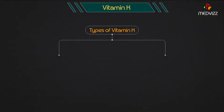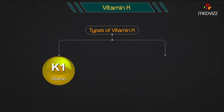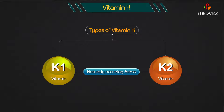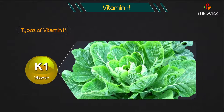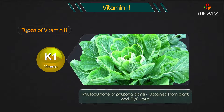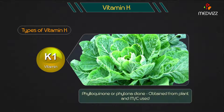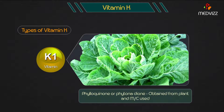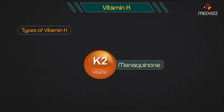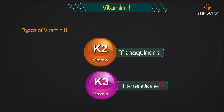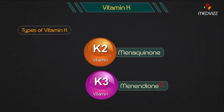Types of Vitamin K: Vitamins K1 and K2 are the two naturally occurring forms of vitamin K, while vitamin K3 is a synthetic analog. Vitamin K1 is Phylloquinone or Phytonadione, obtained from plants and most commonly used. Vitamin K2 is Menaquinone. Vitamin K3 is Menadione.